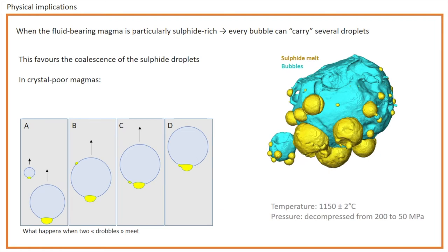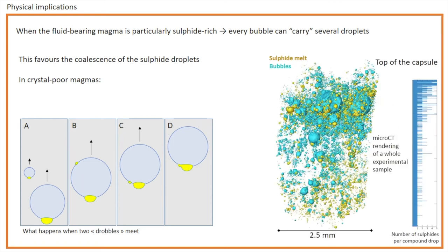Here is a cartoon of what may happen when two drobbles meet in a crystal-poor magma. If the two drobbles have different densities, during rising they can coalesce, increasing both the bubble and the droplet size. In this micro-CT rendering of an oriented experimental sample, we see indeed that the larger bubbles and sulfide droplets are in the upper part of the sample. We also see that the number of sulfide droplets per each drobble increases toward the top of the capsule.